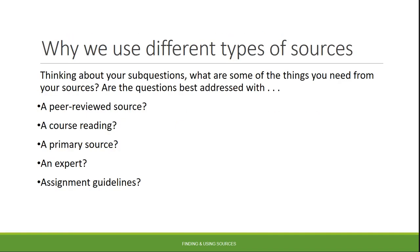Those are the rhetorical moves, and they're good to keep in mind in terms of what kinds of information sources you might need. There are also different types of information sources that can speak to your questions in different ways. If you think about your sub-questions and what you need from your sources, are those best addressed with a peer-reviewed research article — the gold standard of academic scholarship? It might also be a professional source from professional organizations or a government source, which carries the authority of those organizations. There might also be course readings you bring into the mix.